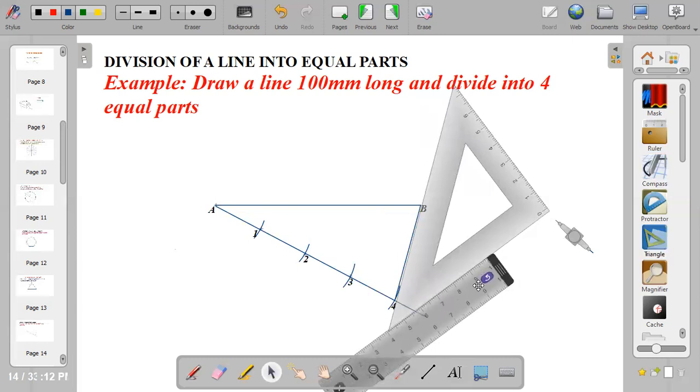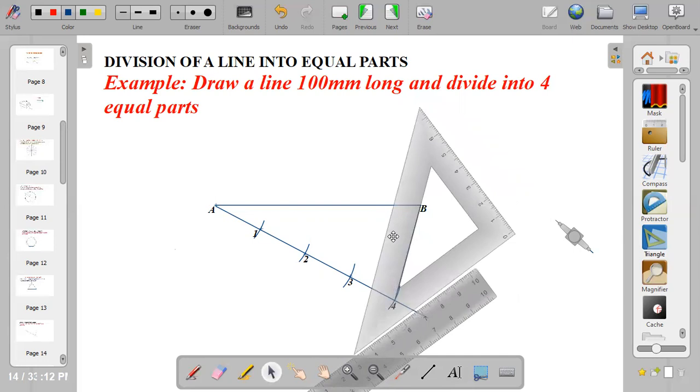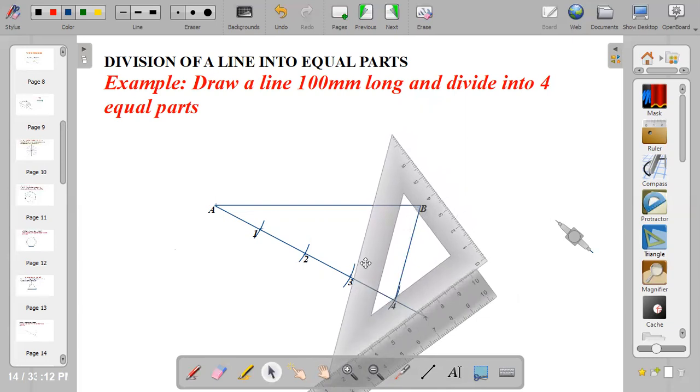Hold your ruler firm to your paper and move the set square from point four. Move it to point three to draw parallel lines to 4B. Then bring out your pencil and draw the parallel line from three.